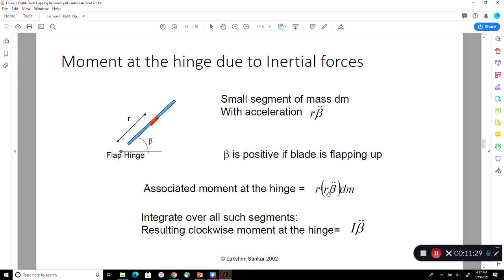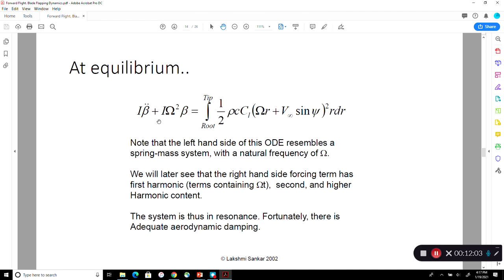So therefore, this will also produce a clockwise moment. The force is dm times r beta double dot. The moment is r times that quantity. So this is r squared with a double dot. So again, if you integrate it, beta double dot is a constant. When you integrate mass times the distance squared, you get our same old moment of inertia. So this is also a clockwise moment. So we gather all the clockwise moments to one side. We gather the counterclockwise moment to the other side. This is the flapping dynamics equation.